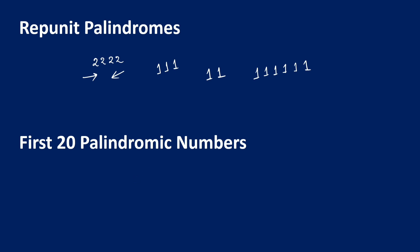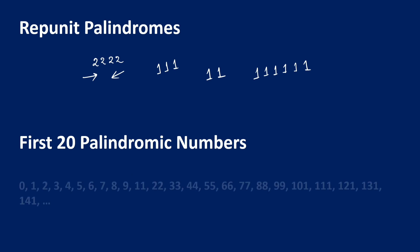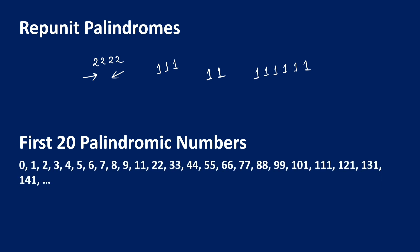The first 20 palindromic numbers: 0, 1, 2, 3, 4, 5, 6, 7, 8, 9 — all single digit numbers are palindromes. Then comes 11, 22, 33, 44, 55, 66, 77, and so on. Let's move to the next slide.